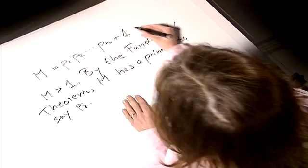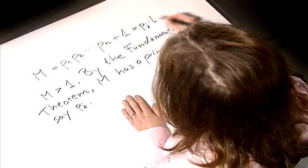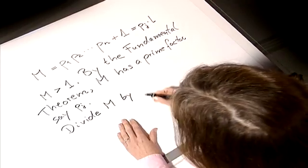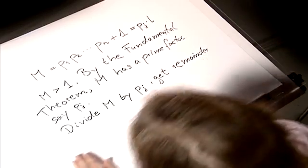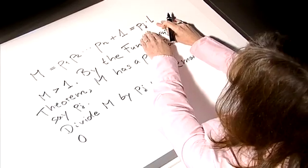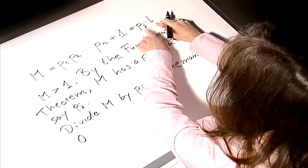Since m has a prime factor pj, we can write m as pj times some integer l. In other words, if we divide m by our prime pj, we get remainder zero.